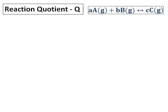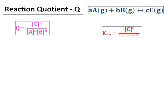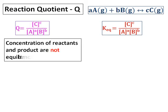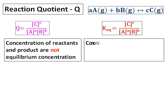The reaction quotient is given the symbol Q. Consider the reaction aA plus bB giving you cC. The reaction quotient for this reaction is concentration of C raised to the power of c, divided by concentration of A raised to the power of a, times concentration of B raised to the power of b. This is similar to the K equilibrium equation — both are exactly the same. The difference is that for Q, the concentrations of reactants and products are not at equilibrium; it can be at any point. Whereas for K-eq, the concentrations are at equilibrium.